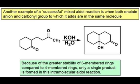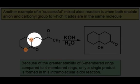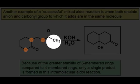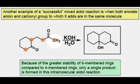Now when you think about carbonyl chemistry and enolate chemistry specifically, you always need to identify the alpha carbons that can be deprotonated. In this molecule, there are four positions that can be deprotonated: this alpha carbon, this alpha carbon, this alpha carbon, and this alpha carbon.